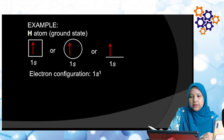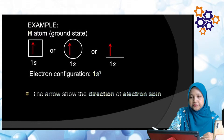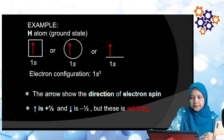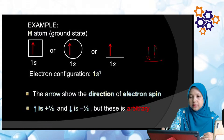Reminder: arrow ke atas tu selalu represent positive spin (+½), arrow ke bawah adalah negative spin (-½). Kebiasaannya kita buat arrow ke atas dulu baru ke bawah, tapi kalau nak buat bawah dulu atas pun boleh — asalkan arrow atas-bawah (opposite spin) dalam satu orbital.